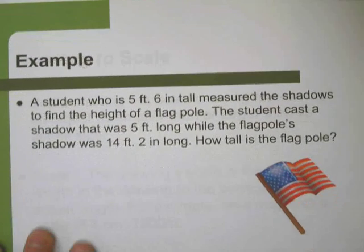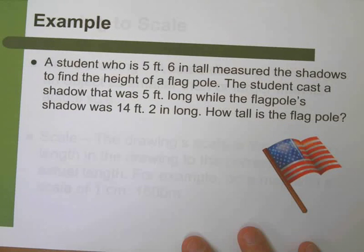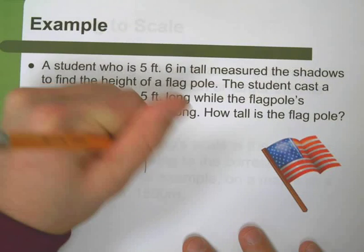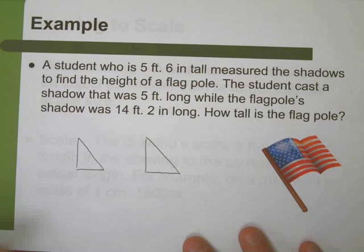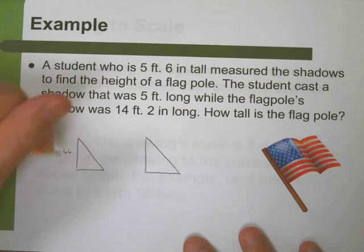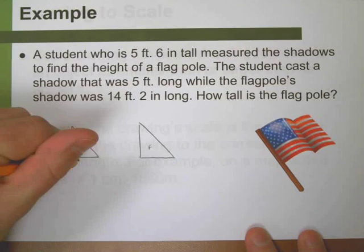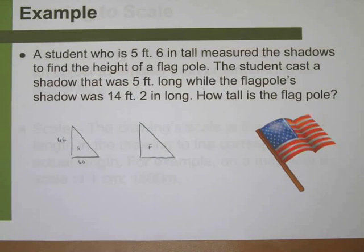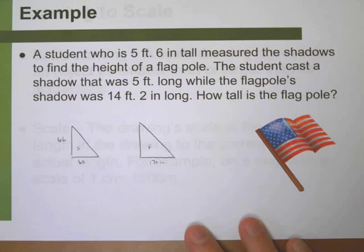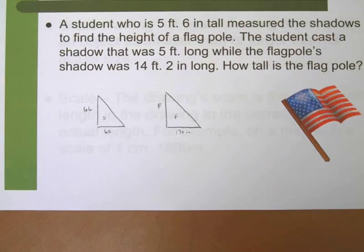Here's another example. A student who's 5'6" - here we go again, we're using shadows - wants to measure the height of a flag. Notice this is two examples and both of them involving shadows. You think those are going to show up a lot in the homework, maybe on tests, maybe on the ACT? Probably so. Let's convert everything to inches so I don't have to deal with anything else. 5 feet is 60 inches, so 5'6" is 66 inches - that's the student. The student cast a shadow that was 5 feet long, so that's 60 inches along the ground. The flagpole shadow is 14 feet 2 inches long. 14 times 12 is 168, add an extra 2, and that's 170 inches. How tall is the flagpole? F for flagpole.